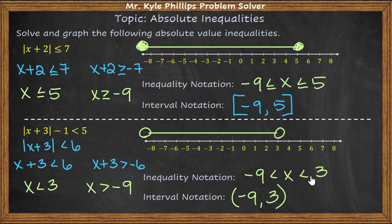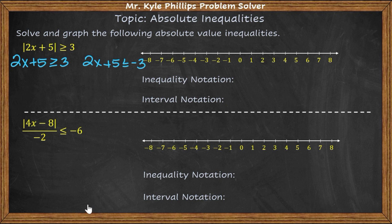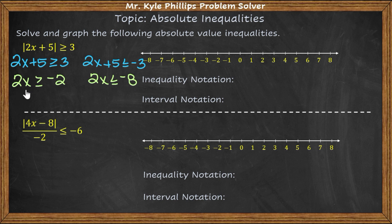Those were examples like 'and' compound inequalities. Now let's look at 'or' compound inequalities. For |2x + 5| ≥ 3, we write: 2x plus 5 is greater than or equal to 3, and 2x plus 5 is less than or equal to negative 3. Subtracting 5: 2x is greater than or equal to negative 2, and 2x is less than or equal to negative 8. Dividing by 2: x is greater than or equal to negative 1, and x is less than or equal to negative 4.